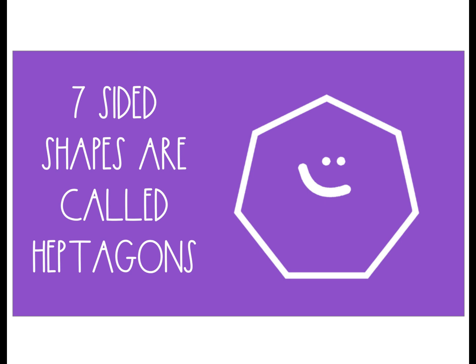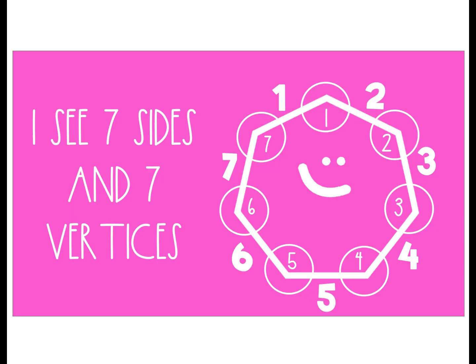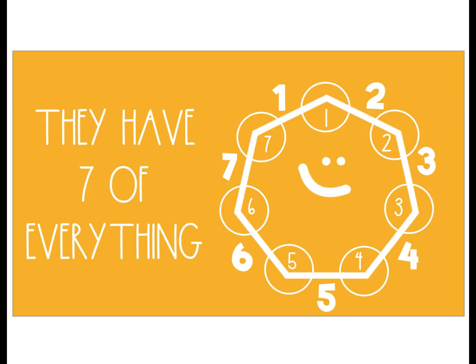Seven-sided shapes are called heptagons. They have seven of everything. I see seven sides and seven vertices — they have seven of everything.